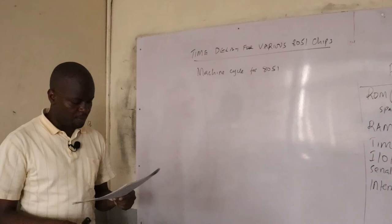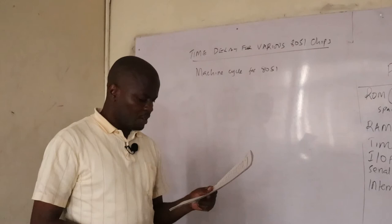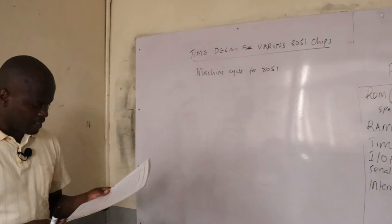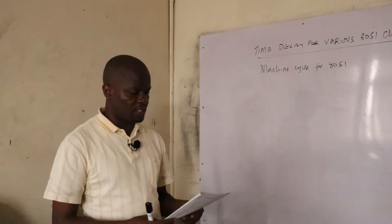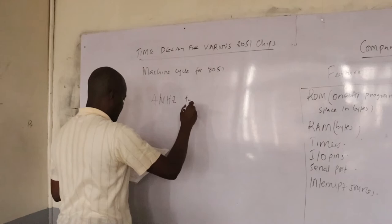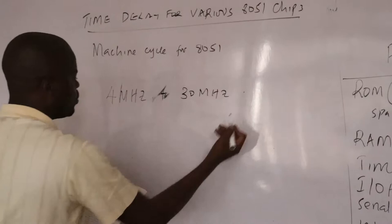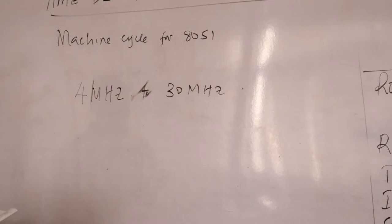From the block diagram of the microcontroller, there is an oscillator circuit. It is this oscillator circuit frequency that determines the machine cycle of the system. The crystal oscillator, along with the on-chip circuitry, provides a clock source for the 8051 CPU. The frequency of the crystal connected to the 8051 family usually varies from 4 MHz to 30 MHz, depending on the chip rating and the manufacturer.